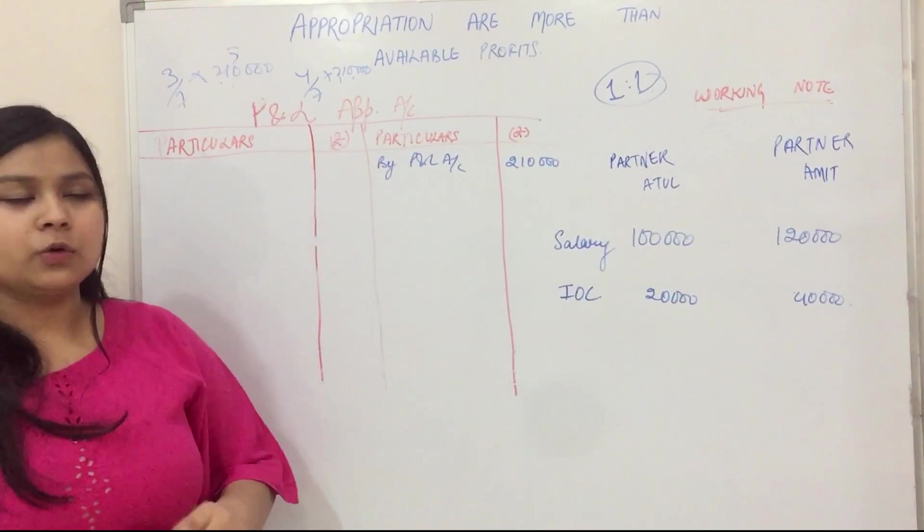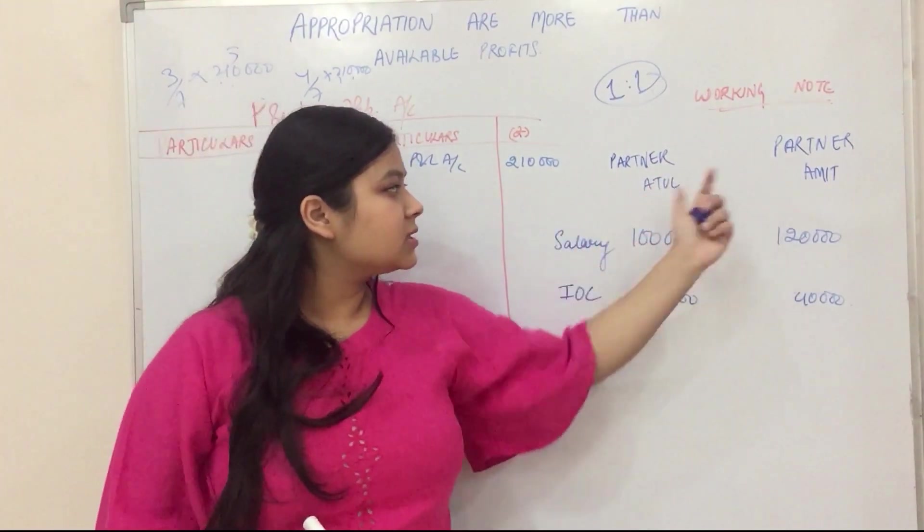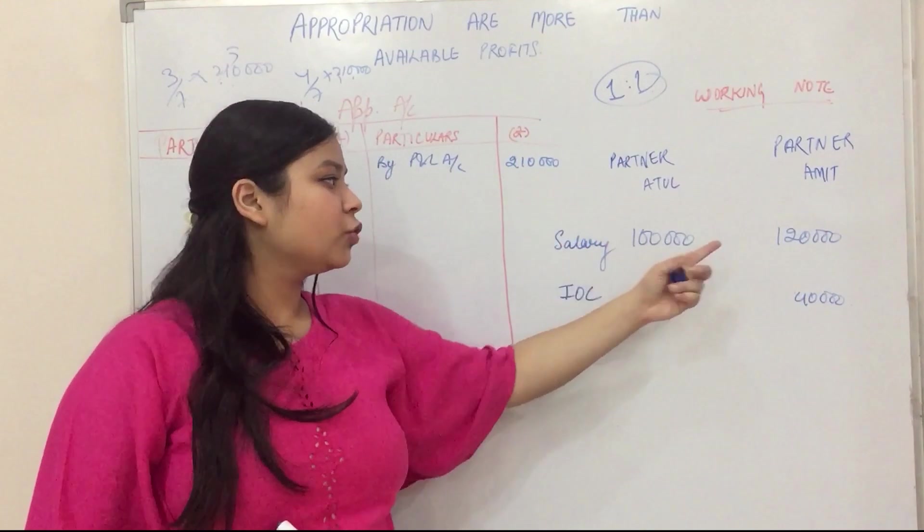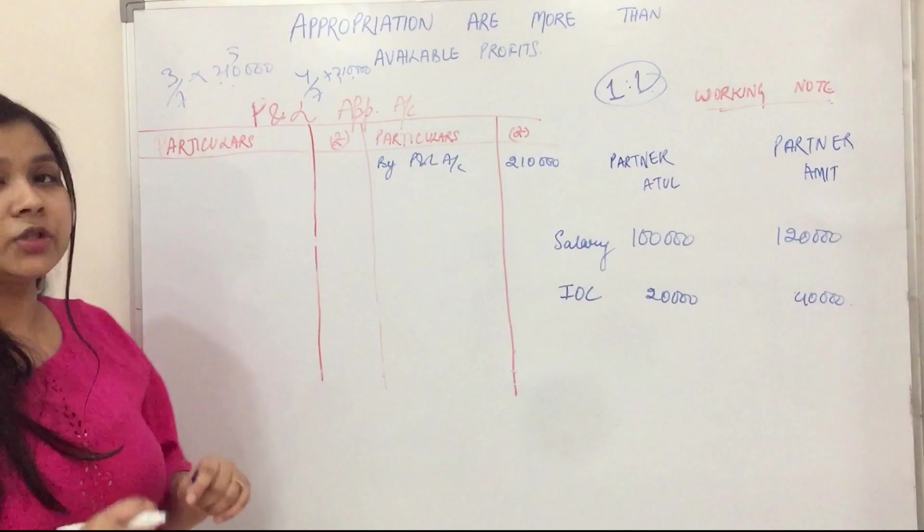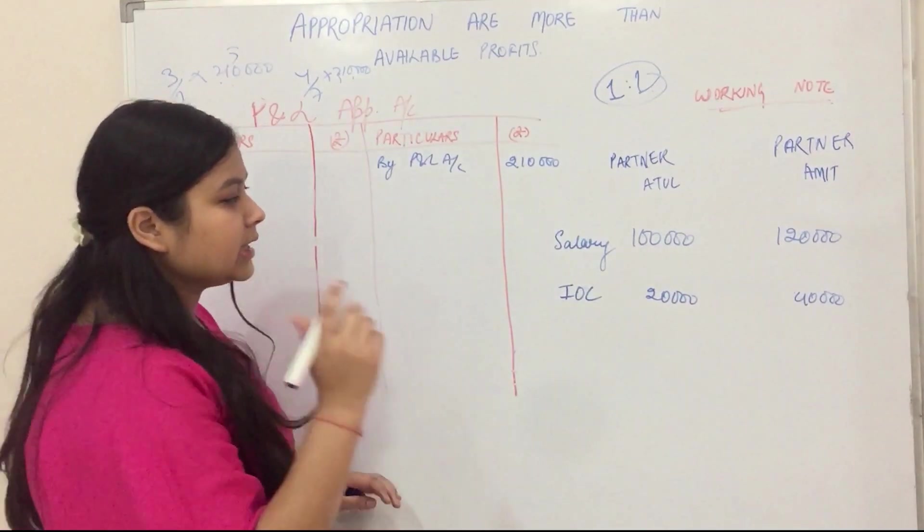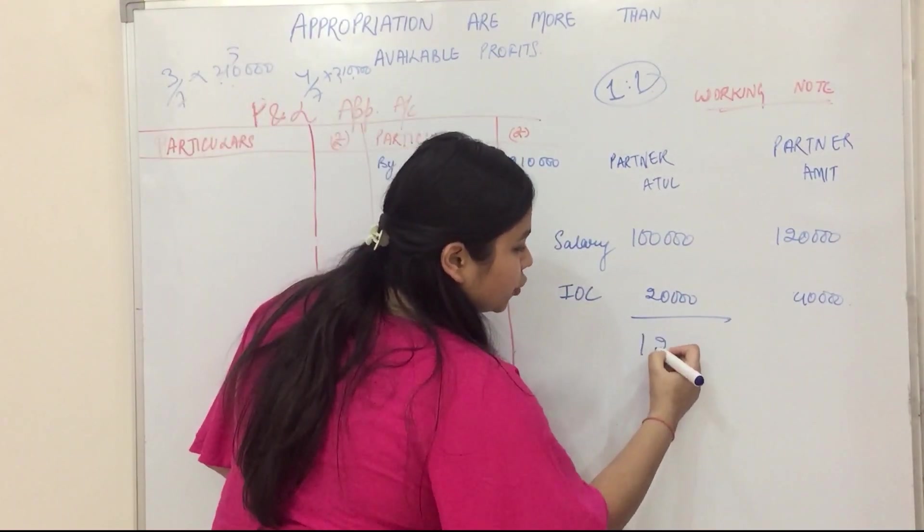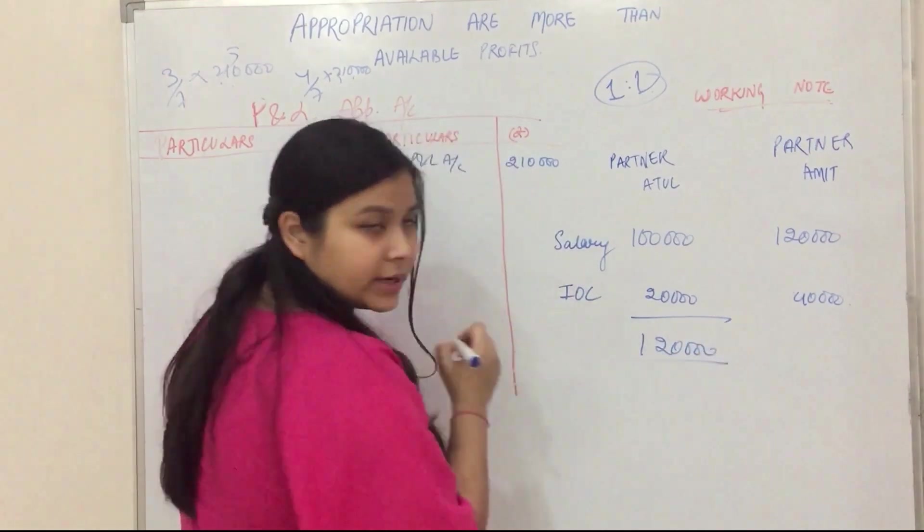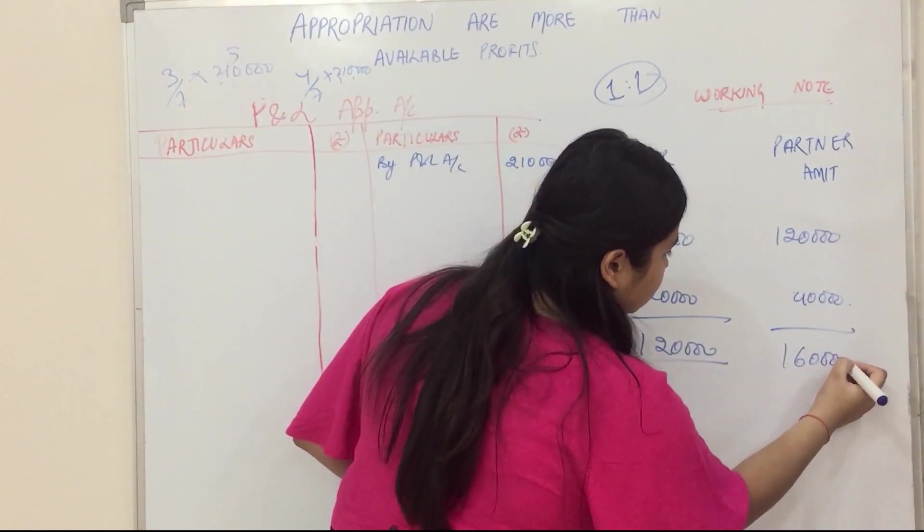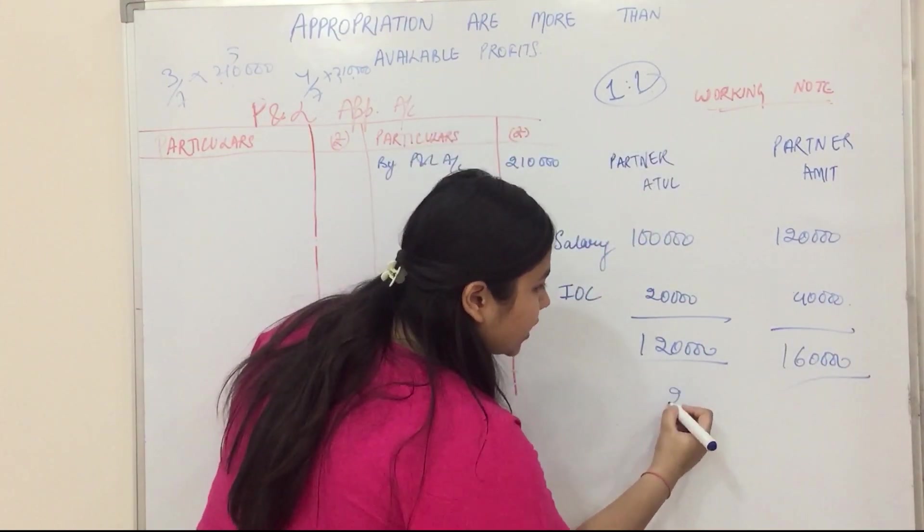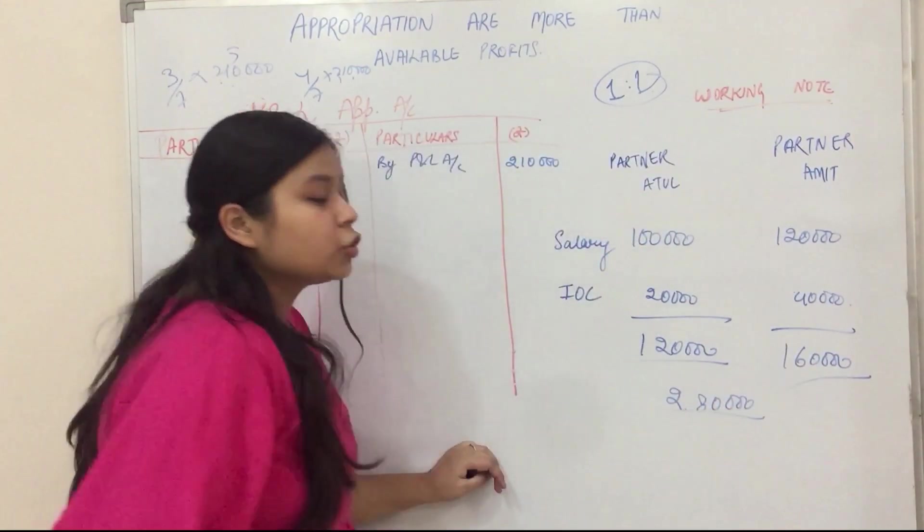This is our question. There are 2 partners: Atul and Amit. But what is the difference in this question? If you do this sum, it is 1,20,000 and it will be 1,60,000. So if you do this total, it will be 2,80,000. So we have to appropriate 2,80,000.